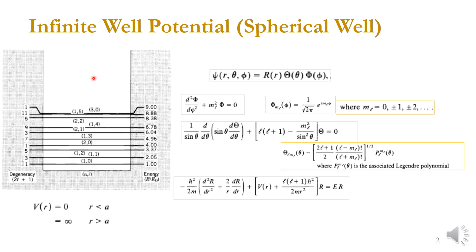We solve the Schrödinger equation using separation of variables, obtaining solutions in r, θ, and φ. We also define the energy eigenvalues. Considering the degeneracy, the number of nucleons per shell comes out to certain values.